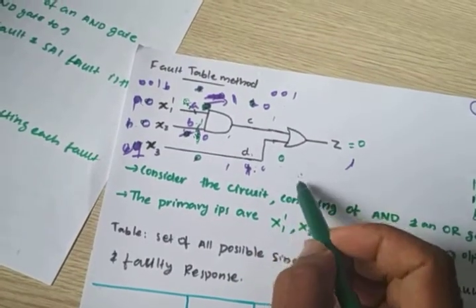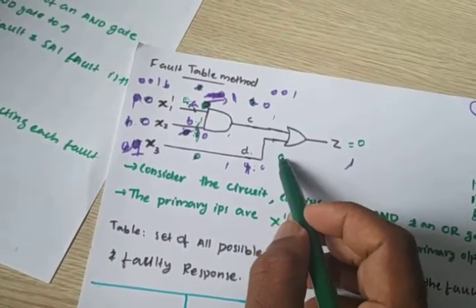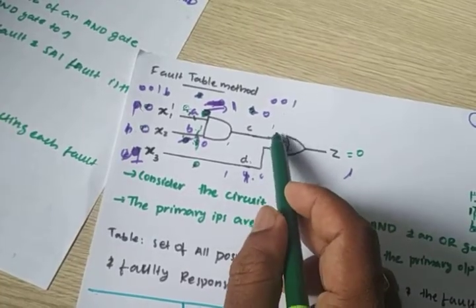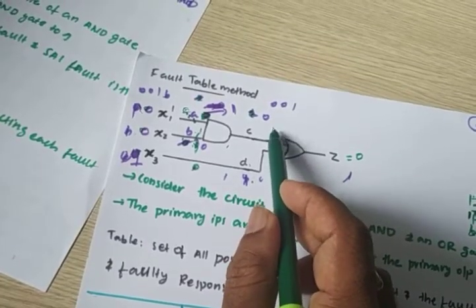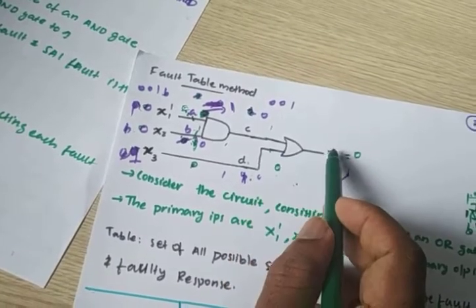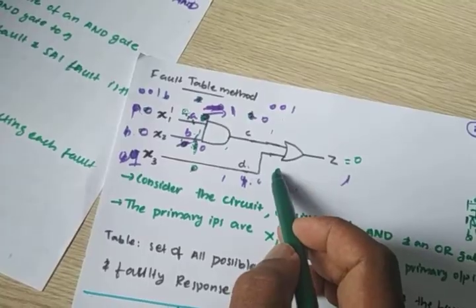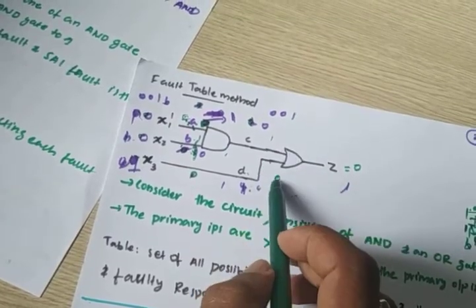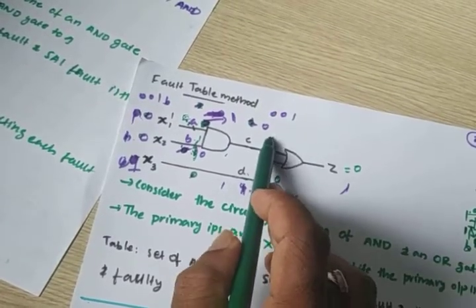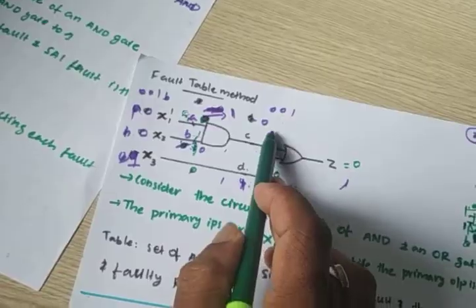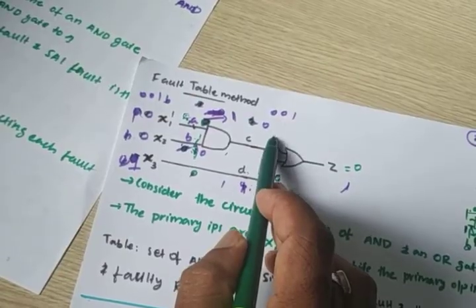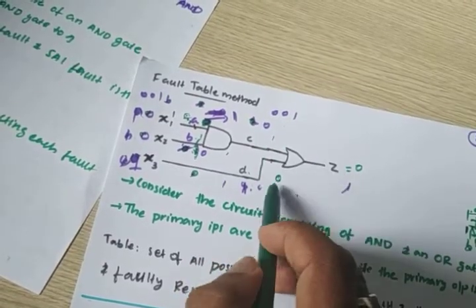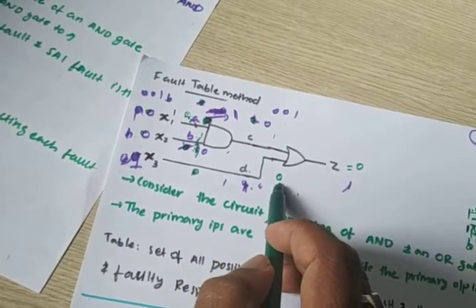Because if 0 is stuck at one input of the OR gate, it cannot change the output; the output always depends on the other input. If 1 came at the other input, output is 1. If 0 came, output is 0. So stuck-at-0 at the input of an OR gate is the weak fault.